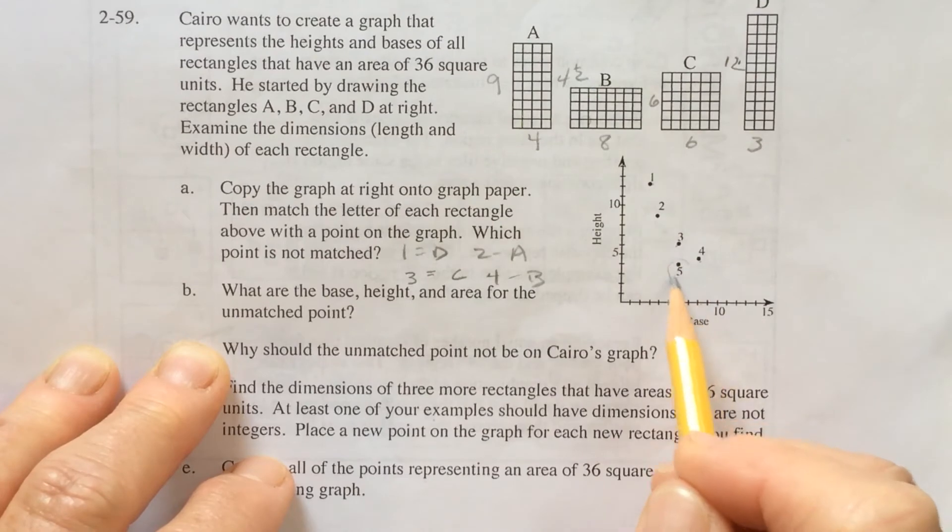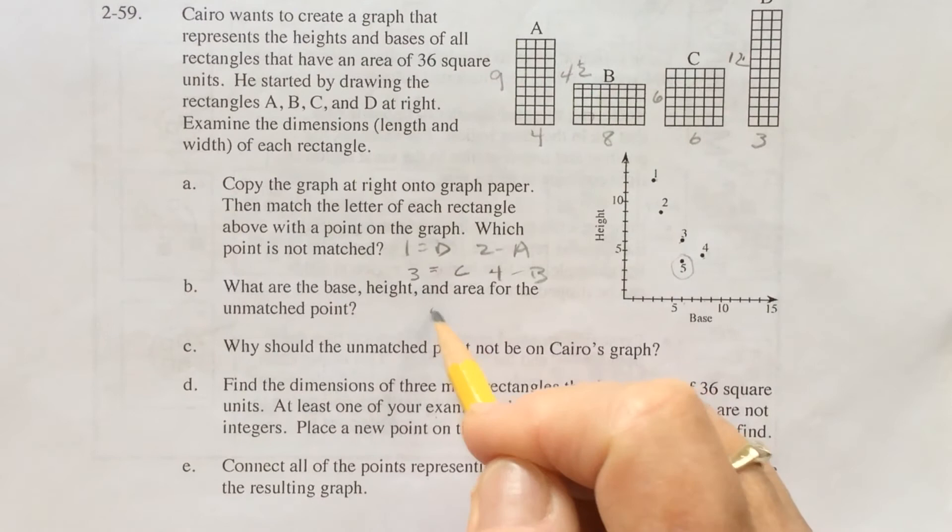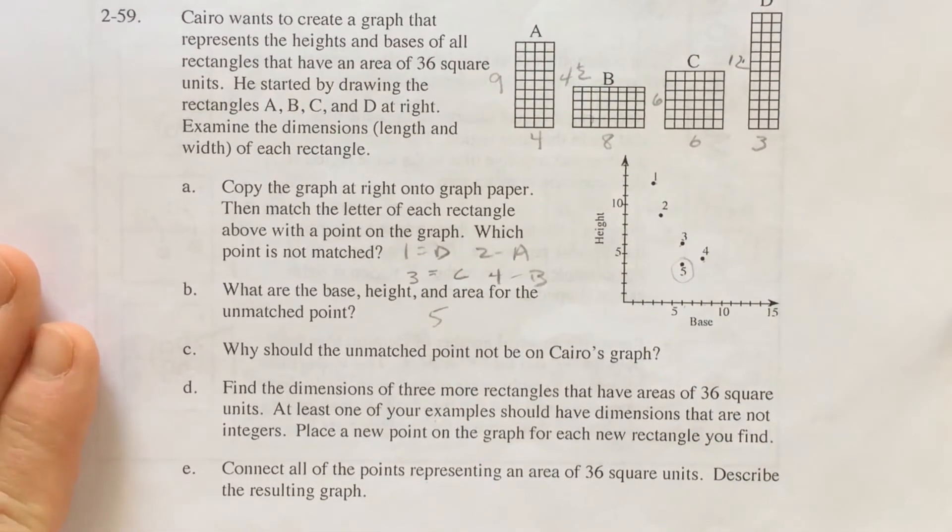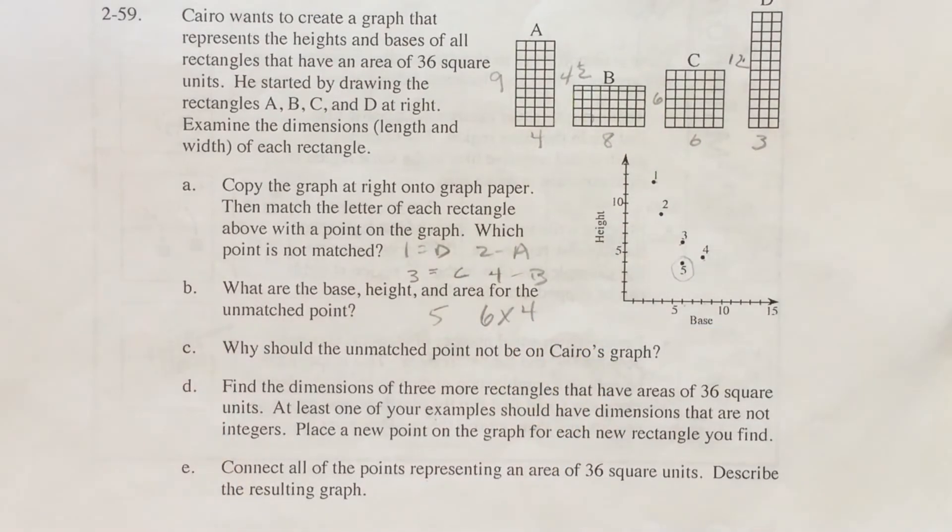This one, number 5, doesn't really belong. So it is not matched. And it looks like it's 6 by 4, which is only 24. So it doesn't belong there because it has an area of 24 and not 36.